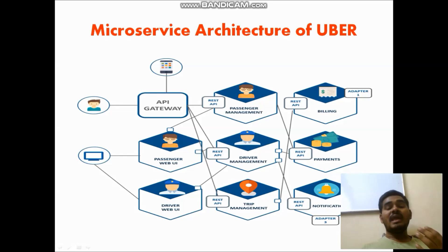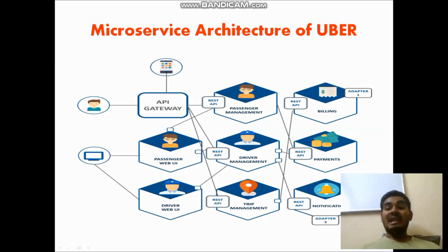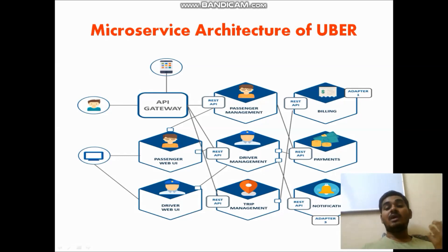In Uber's microservice architecture, there is only one API gateway connected to different modules: passenger management, driver management, and trip management — three primary modules. Billing is managed by trip management, payments by passenger management, and notifications to drivers about customer arrivals and bookings are handled independently. These modules are not interdependent; the API gateway connects all modules so each can work independently. If there is a problem in the payment section, it will not affect others.